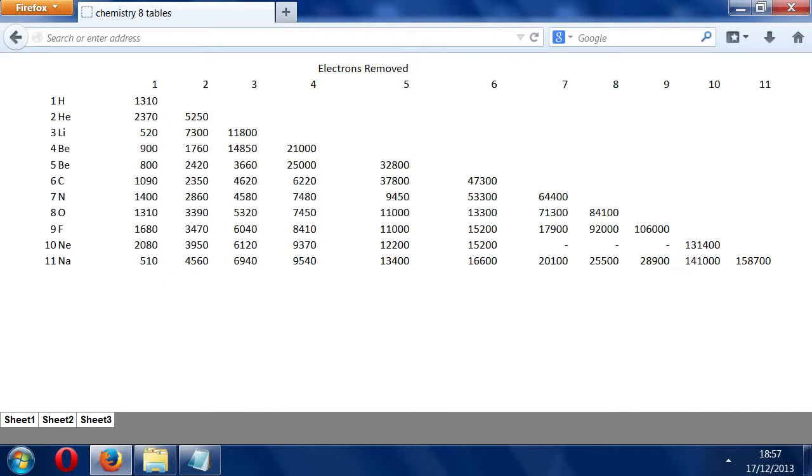Looking at oxygen, the difference between seven electrons removed and eight electrons removed is huge. We're going from about 16,000 to 71,000, multiplying about five times. There are also huge changes between five and six for carbon, and between three and four for beryllium. This big change happens when we break into inner shells based on quantum numbers.